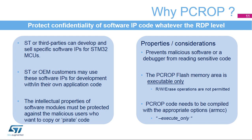In other words, PCROP consists of preventing malicious software or debuggers from reading sensitive code. The protected area is execute-only and can only be reached by the STM32 CPU as instruction code, while all other accesses — DMA, debug, and CPU data read, write, and erase — are strictly prohibited. This means that the code to be protected must be compiled using a specific compiler option, for example, --execute_only for Keil tools.